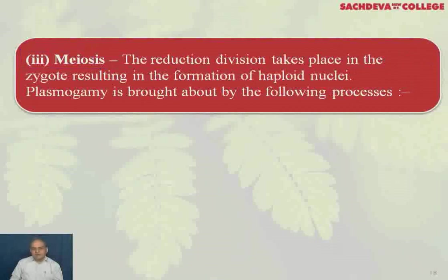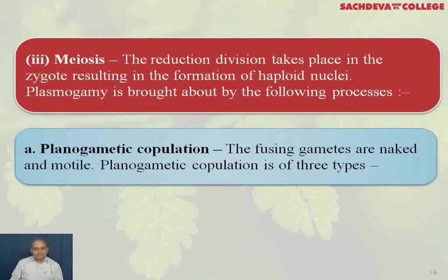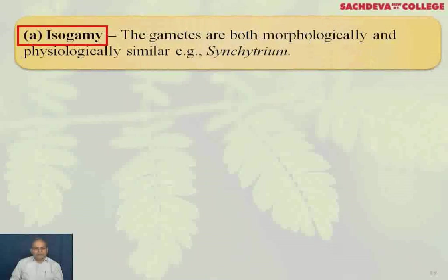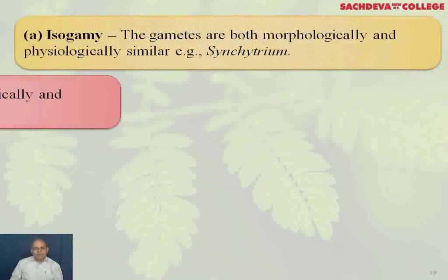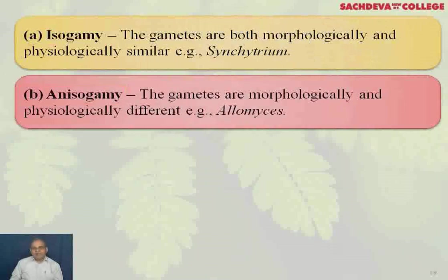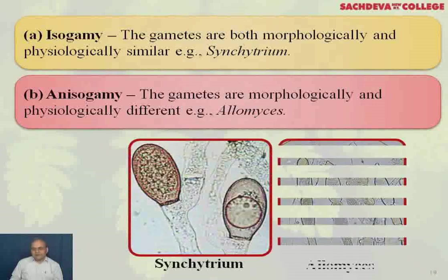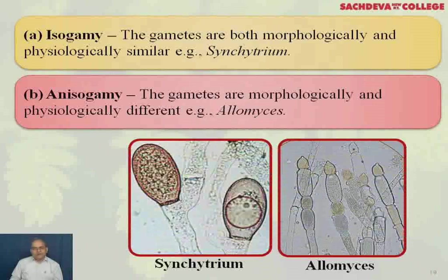Plasmogamy is brought about by the following processes. Planogametic copulation: the fusing gametes are naked and motile, and it is of three types — isogamy, where gametes are morphologically and physiologically similar (example: Synchytrium); anisogamy, where gametes are morphologically and physiologically different (example: Allomyces). This is Synchytrium showing isogamy and this is Allomyces showing anisogamy.